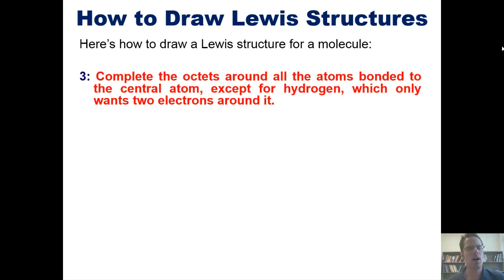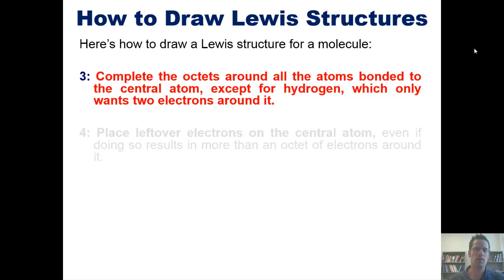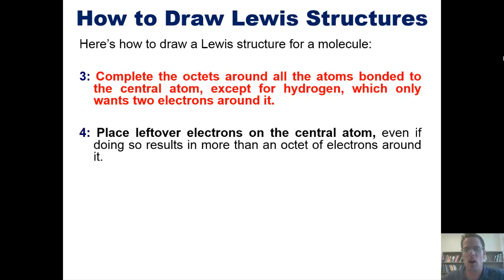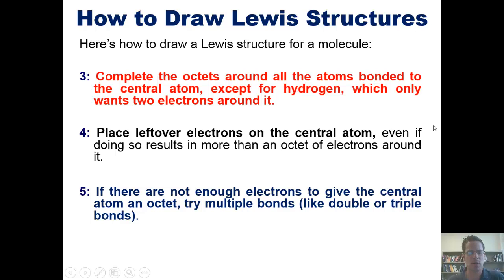Step three, complete the octets around all the atoms bonded to the central atom except for hydrogen, which only wants two electrons around it. Four, place leftover electrons on the central atom, even if doing so results in more than an octet of electrons around it. And five, if there are not enough electrons to give the central atom an octet, try multiple bonds such as double or triple bonds.